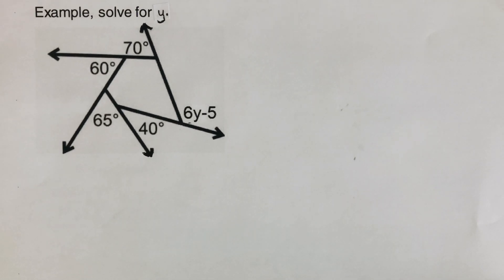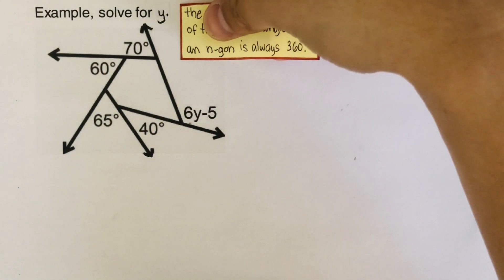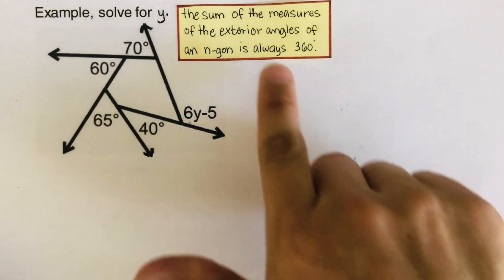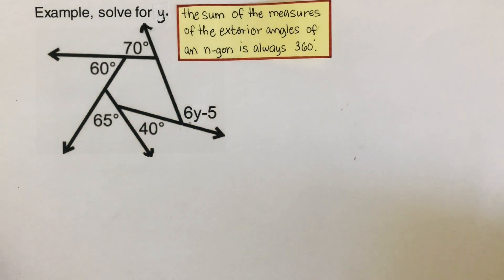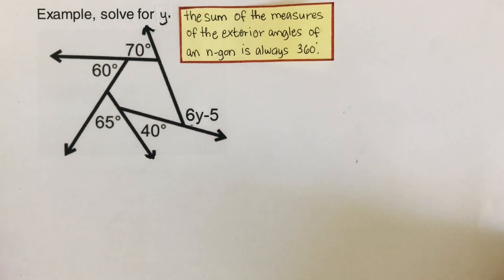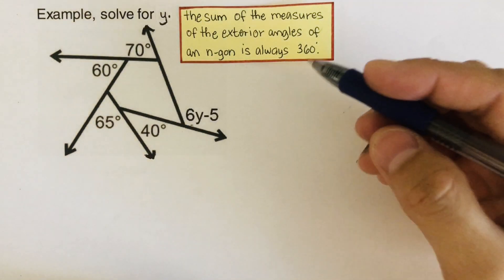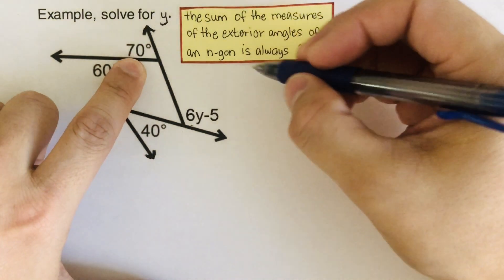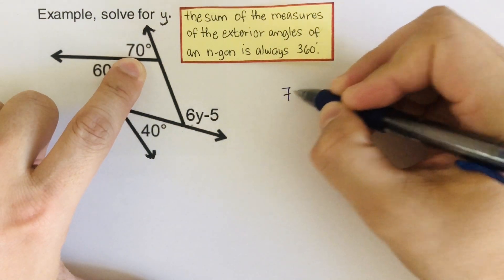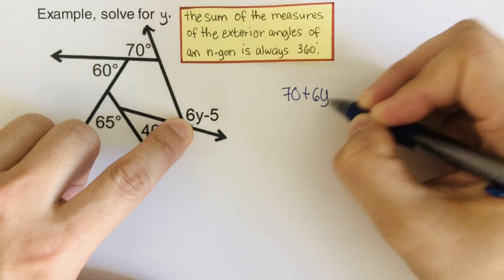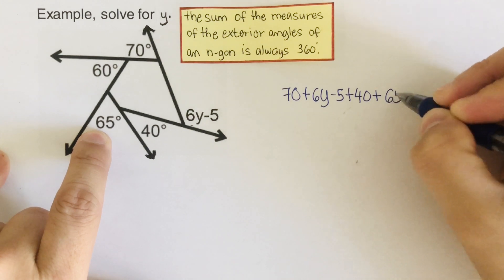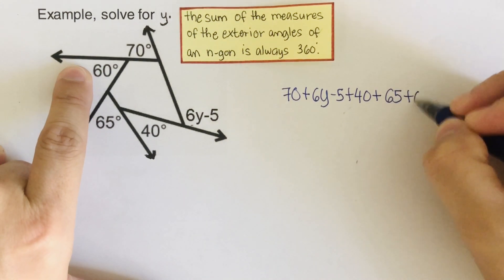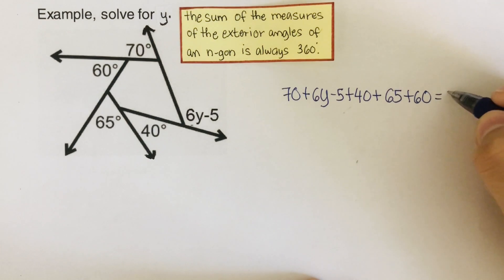Okay, let's go over the problem here. It's pretty much the same thing. I wrote the note that we used at the beginning - the sum of the measures of the exterior angles of an n-gon is always 360. So from here, we can write this all out. I'm going to start with 70: 70 plus 6y minus 5 plus 40 plus 65 plus 60 equals 360.